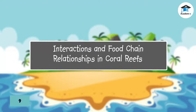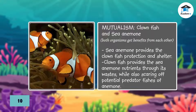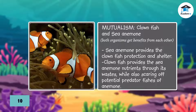Interactions and food chain relationships in coral reefs. The clownfish and sea anemone relationship exhibits mutualism. The sea anemone provides the clownfish protection and shelter, while the clownfish provides the sea anemone nutrients through its wastes while also scaring off potential predator fishes of the anemone.